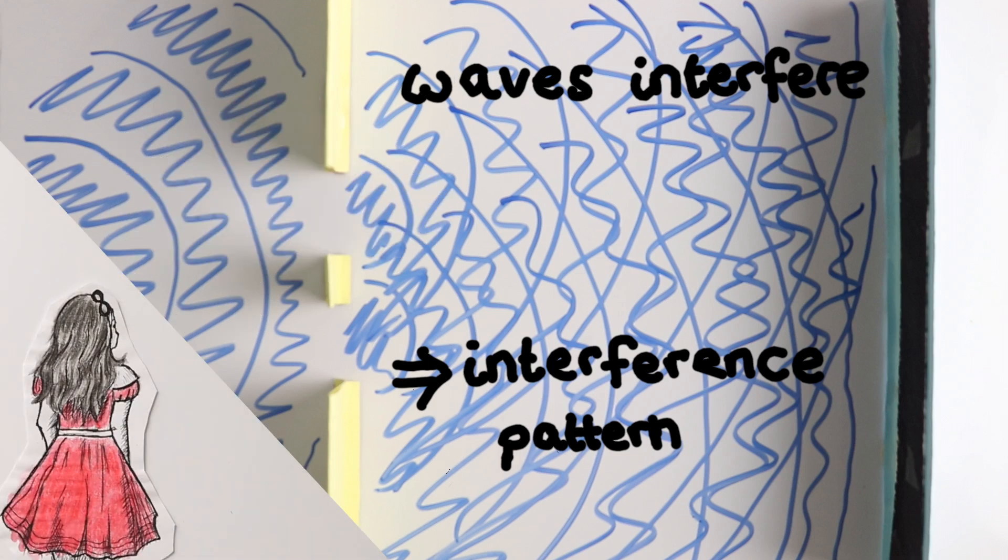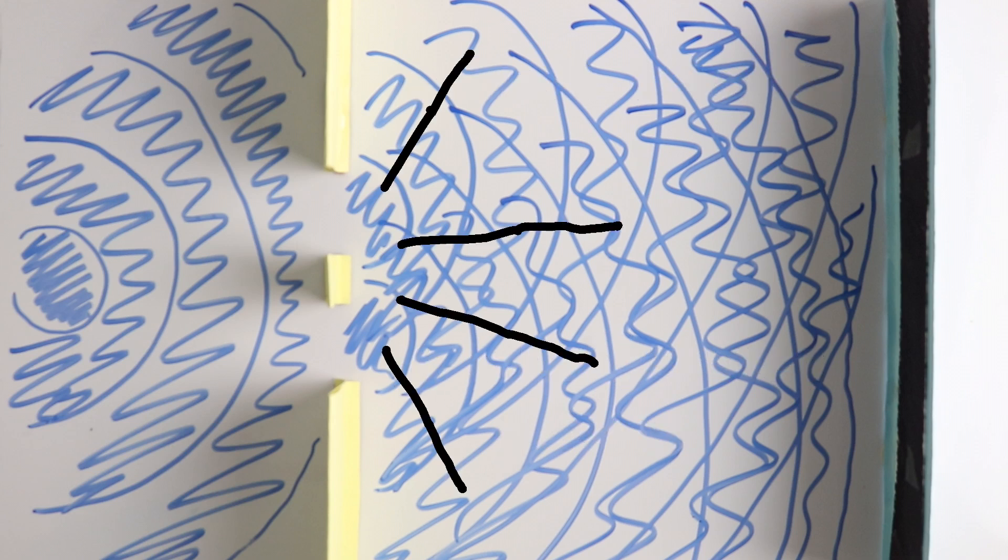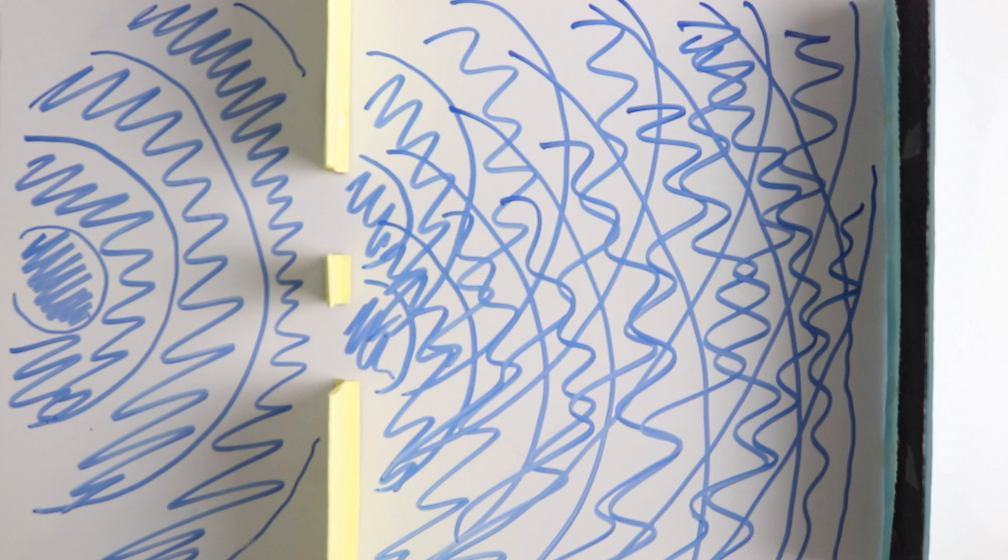Here's the first problem though, with thinking of the electrons as literal waves. If the electron is in fact spreading out like this, then where does it touch the back wall?